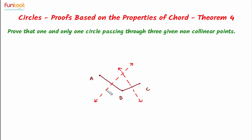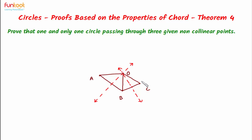So these are the perpendicular bisectors of AB and BC. Let them intersect at a point O. Now we will join A, O and B, O and C, O. Joining these points, we know the important property that if BC is a line segment, then all points on its perpendicular bisector are equidistant from its endpoints B and C.